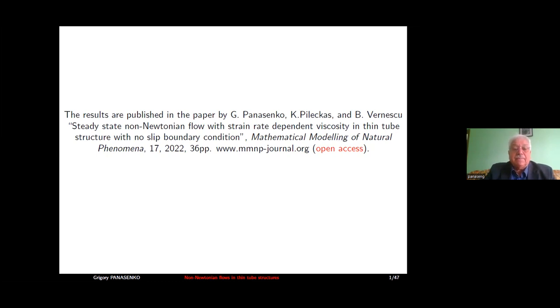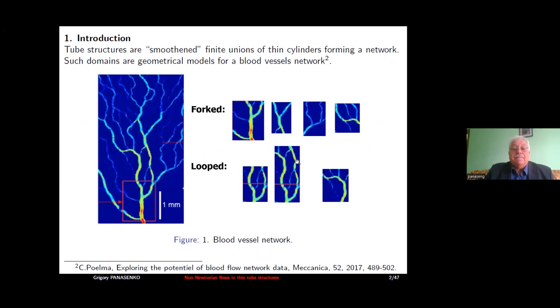What are thin tube structures? Thin tube structures are some hemodynamic considerations. These tube structures are smooth finite unions of thin cylinders forming a network. Such domains are geometrical models for blood vessels network.